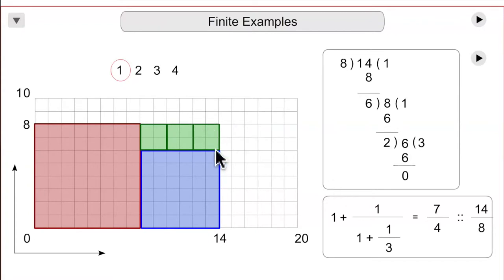And notice the greatest common denominator, 2 by 2. 2 times 7, 2 times 4, is 14 eighths, which is the size of the grid.